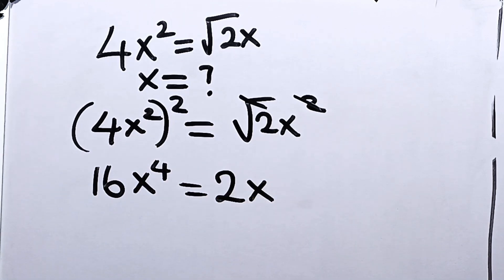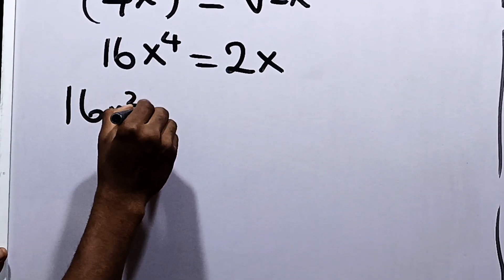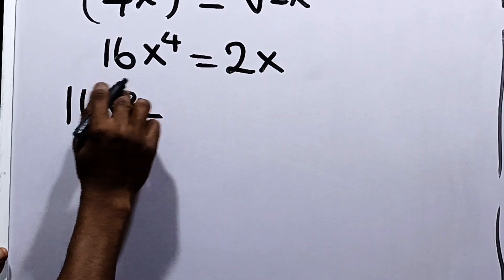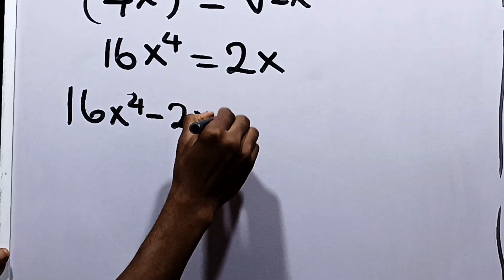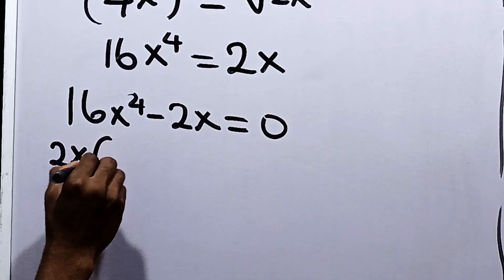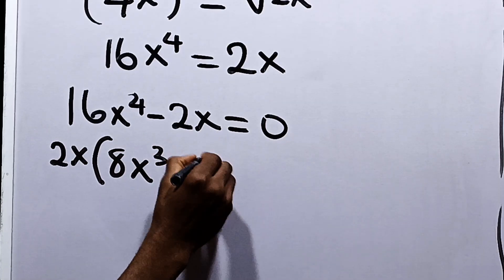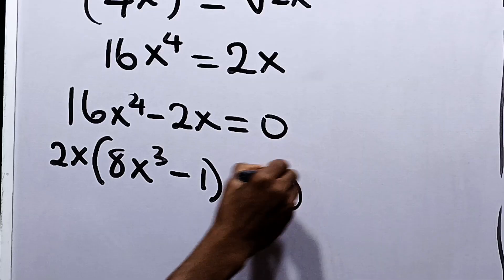Now, from here we can say 16x to the power of 4 minus 2x is equal to 0. Now, you have 2x into 8x cubed minus 1 is equal to 0.